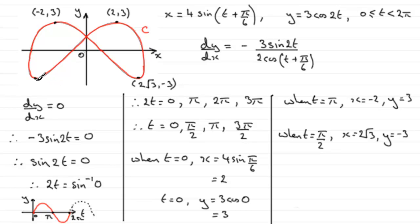And no surprises, because of the symmetry, this point over here is minus 2 root 3, and minus 3 for the y-coordinate. And you get that when t equals 3 pi upon 2. When t equals 3 pi upon 2, x turns out to be minus 2 root 3, and y turns out to be equal to minus 3.